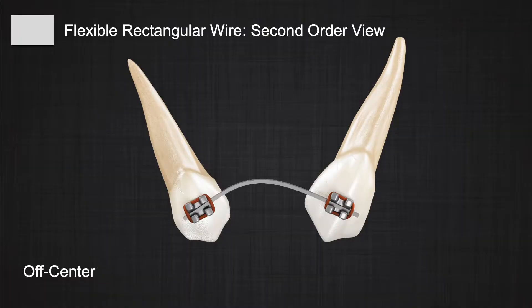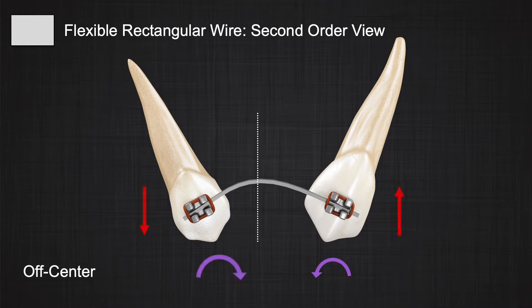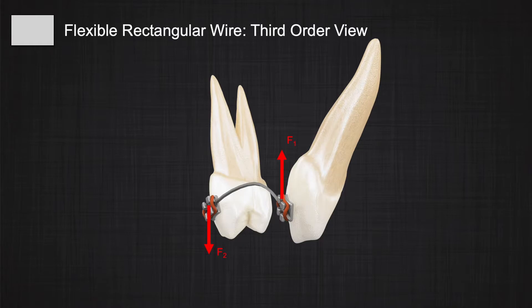On the other hand, if the angulation of the bracket causes the rectangular wire to adopt an asymmetric V-bend — meaning the bend in the wire is closer to one bracket — vertical forces appear in your second-order view. These vertical forces and moments that appear in the second-order view may be clinically useful, but are they useful in the third-order view?